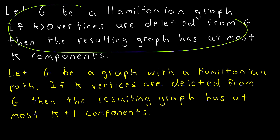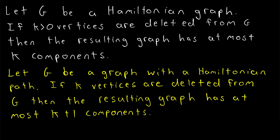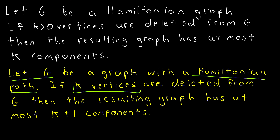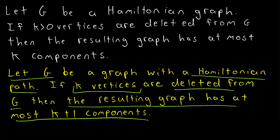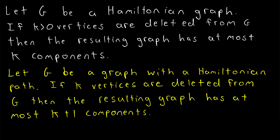This is a very easy result to prove, but it's only so easy because we're going to use this other result that we already proved. This similar result states that for any graph G with a Hamiltonian path, if k vertices are deleted from G, then the resulting graph has at most k plus 1 components. I'll leave a link in the description to a lesson proving this result. Check the pinned comment for a more brief proof, but definitely check the video out if you're not familiar with this result, as we're going to use it in this proof.